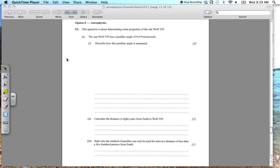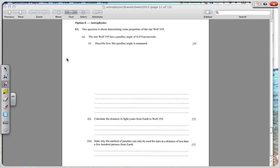So the first part of the question, E1, the question is about determining some properties of Star Wolf 359. Star Wolf 359 has a parallax angle of 0.419 arc seconds, and then describe how this parallax angle is measured.